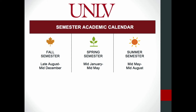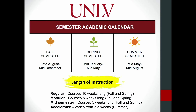The academic calendar is divided into three semesters: Fall (late August to mid-December), Spring (mid-January through mid-May), and Summer (mid-May through mid-August). Most courses run the regular 16-week allotment in Fall and Spring. Some courses are modular, running about eight weeks. Mid-semester courses are usually online and approximately five weeks long, while the Summer semester has three separate terms varying from three to five weeks.